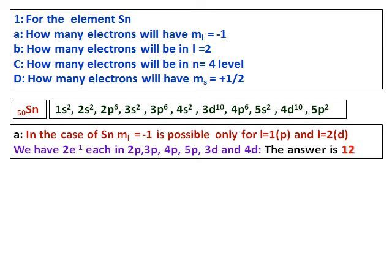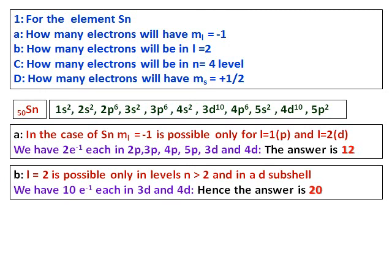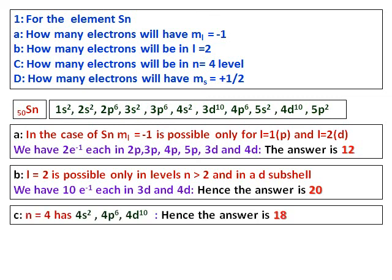For l = 2 (d subshells): tin has 3d and 4d, each holding 10 electrons, so the answer is 20. For n = 4: the relevant subshells are 4s2, 4p6, and 4d10, giving a total of 18 electrons in the n = 4 level.